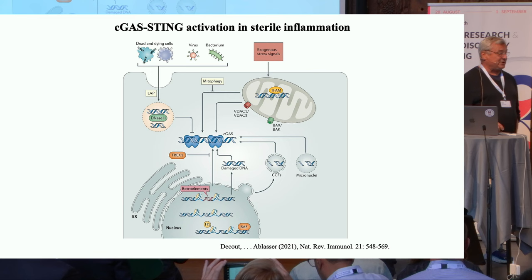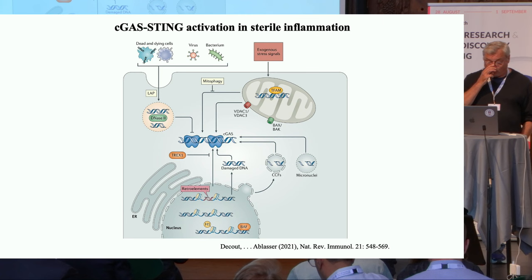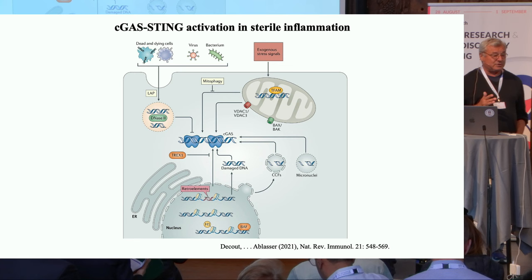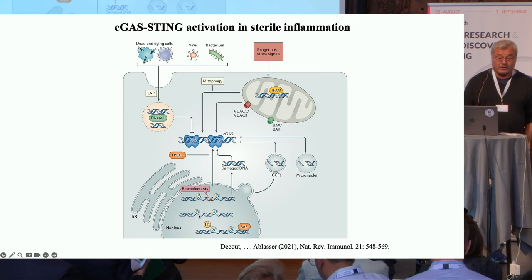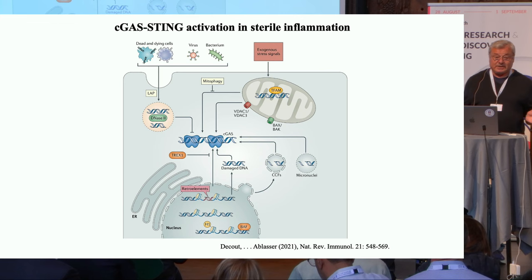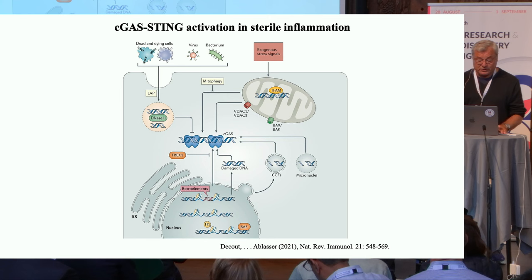cGAS-STING is really hot right now. As things always turn out, they're much more complicated than you initially think. The cytoplasm seems to be full of DNA coming from all over the place — mitochondria, which I believe Joao Passos will discuss, and also from the nucleus, where Shelley Berger and Peter Adams have done a fair amount of work. We don't really know yet the full tally and composition of the DNA species in the cytoplasm, but this is the emerging picture.